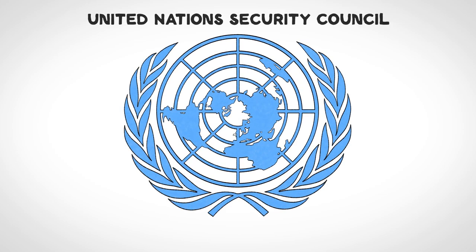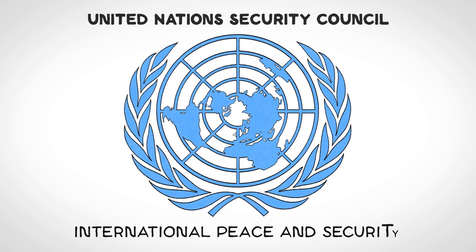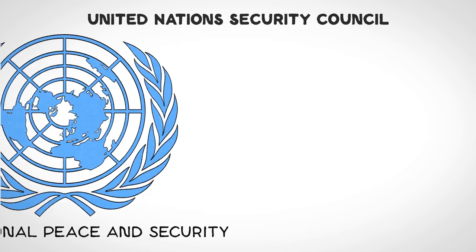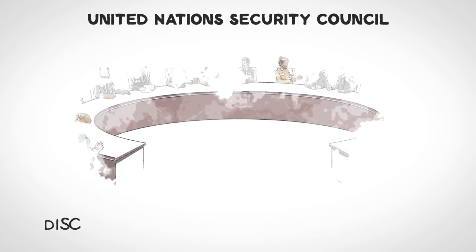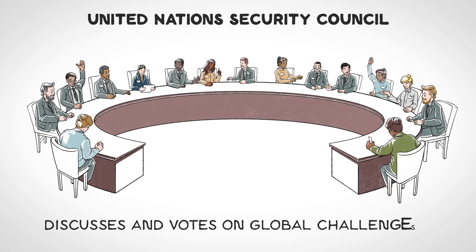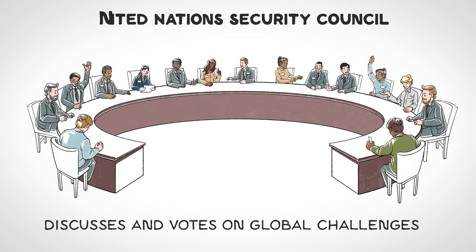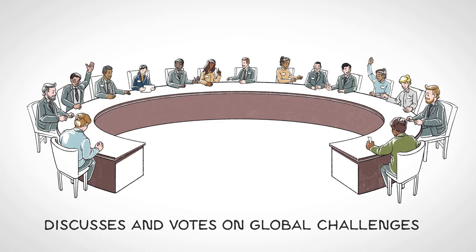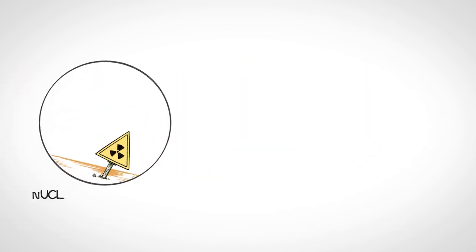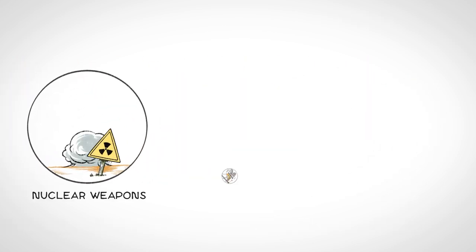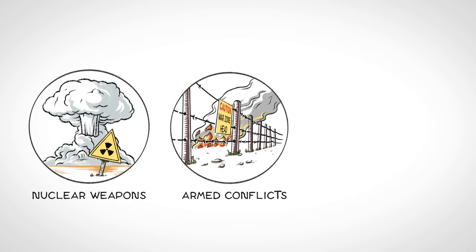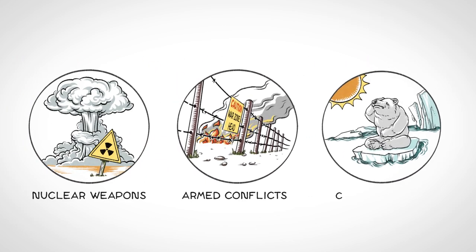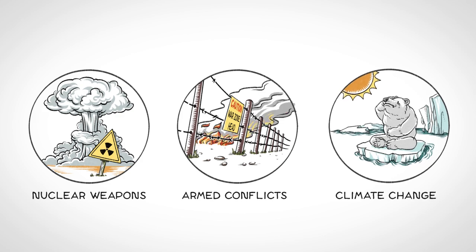The United Nations Security Council works to maintain international peace and security. It discusses and sometimes votes on potential solutions to a wide range of global challenges, from the spread of nuclear weapons, to armed conflicts, to even climate change.